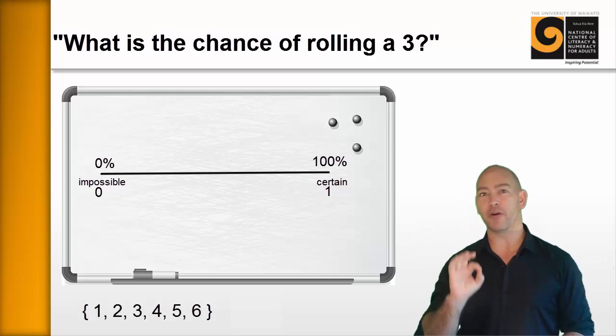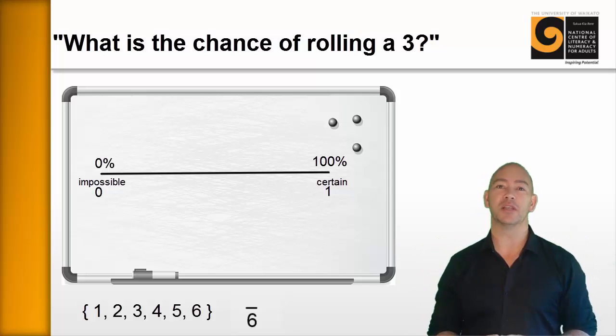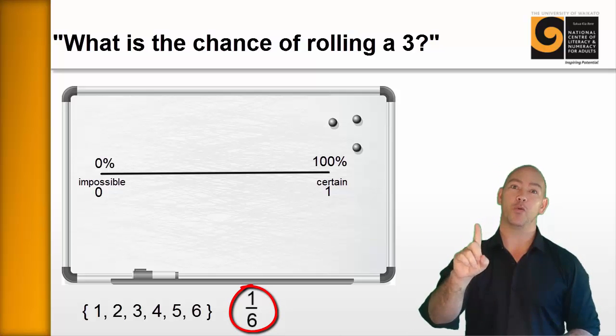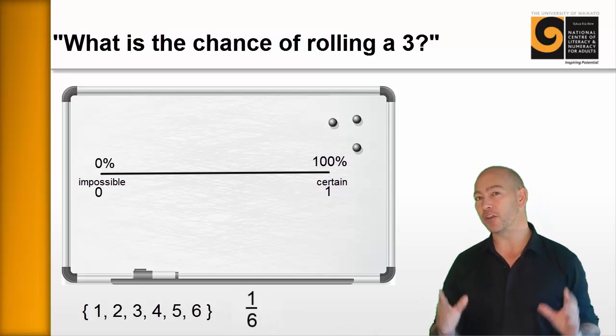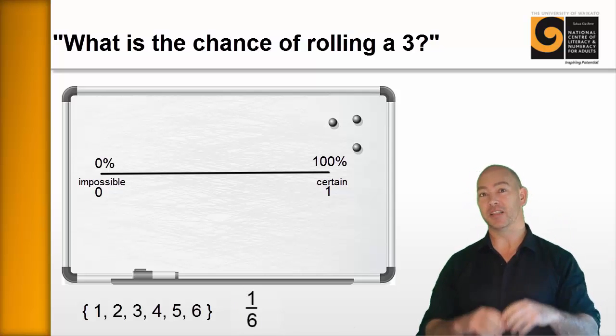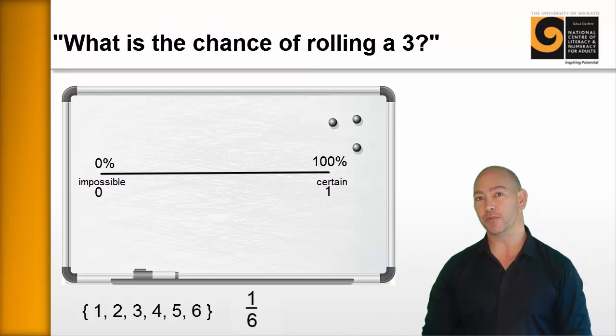So the bottom number of our fraction is going to be a 6. That's the total number of things in the sample set. And how many of those things are a 3? Well, there's just one of them. It can only be one 3. So the answer is, the chance of rolling a 3 is 1 out of 6. That's 1, that's the particular item in the sample set. And the bottom number is the total number of items in the sample set.